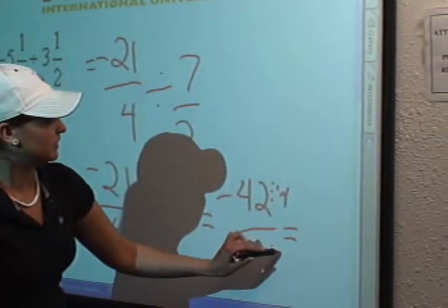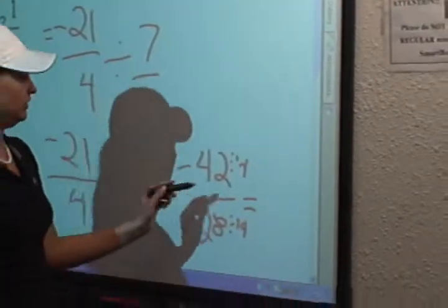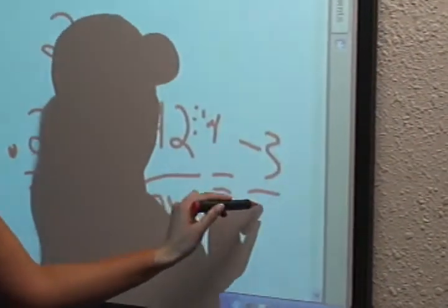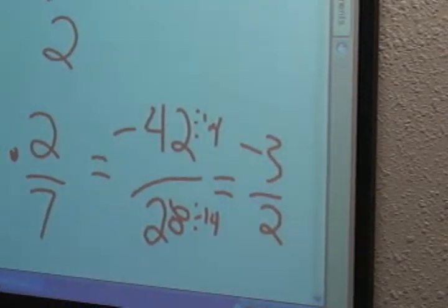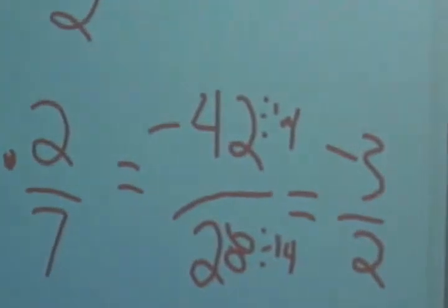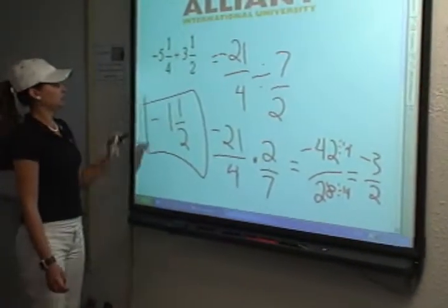Divide both sides by 14 to get negative 3 halves. And then if you reduce that, you get negative 1 and a half. And that is your answer.